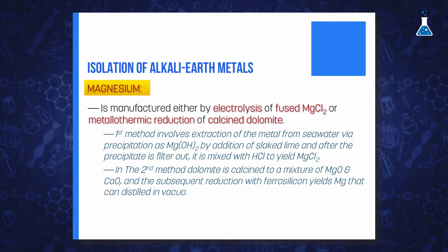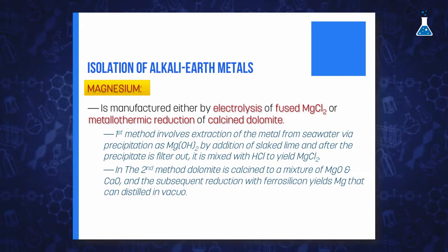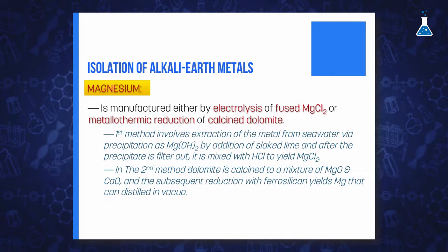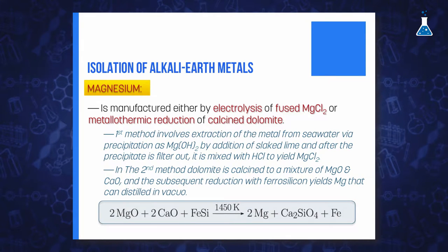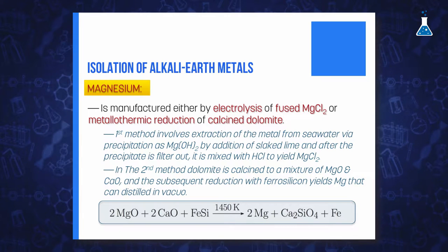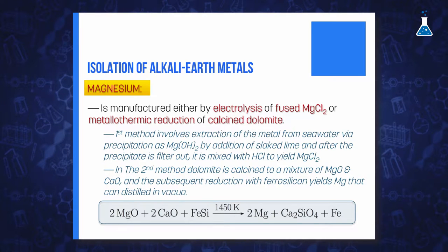In the second method, dolomite is thermally decomposed to a mixture of magnesium oxide and calcium oxide, and magnesium oxide is reduced by ferrosilicon. Finally, magnesium is removed by distillation in vacuum.